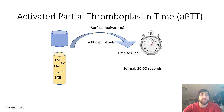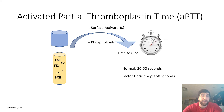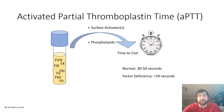An APTT time outside the expected range is indicative of a deficiency in a member of the contact or common pathway: prothrombin (2), 5, 8, 9, 10, 11, or 12. The APTT test is useful for measuring heparin therapy, antiphospholipid antibodies such as the paradoxically named lupus anticoagulant, hemophilia and its treatment, and sepsis.